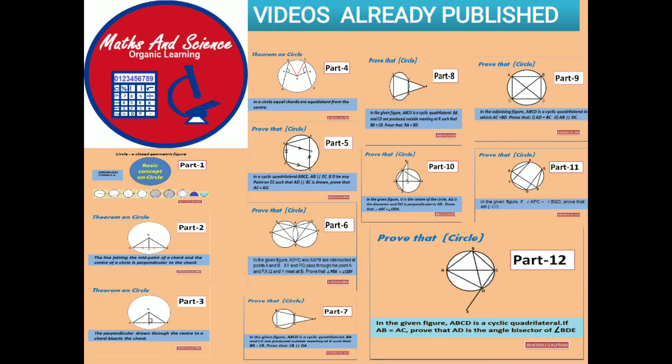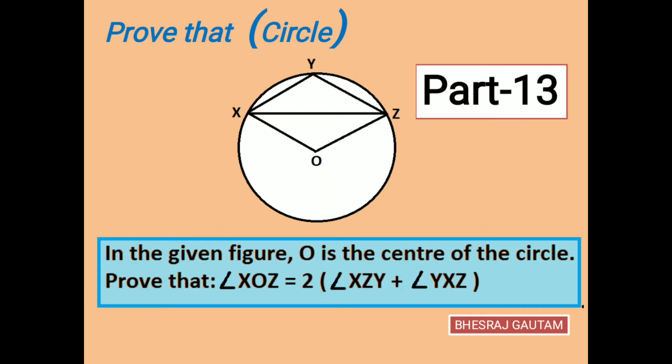In today's question, a circle is given with center O and a quadrilateral XOZY is constructed within it. We are to prove angle XOZ to be equal to double of angle XZY plus angle YXZ.